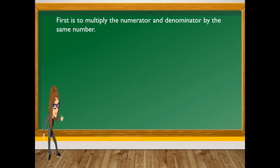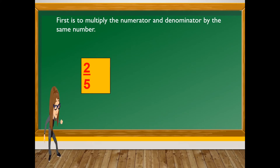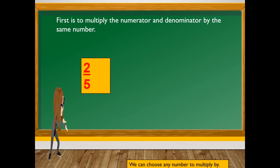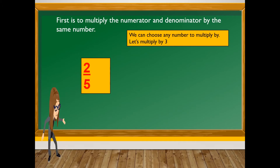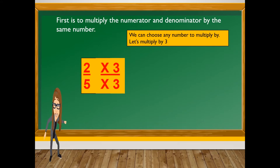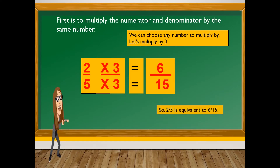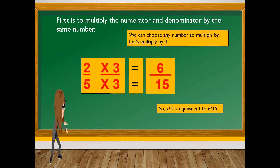First, multiply the numerator and denominator by the same number. We have two-fifths — we can choose any number to multiply. Let's multiply by three. Two times three is six, and five times three is fifteen. So two-fifths is equivalent to six over fifteen.